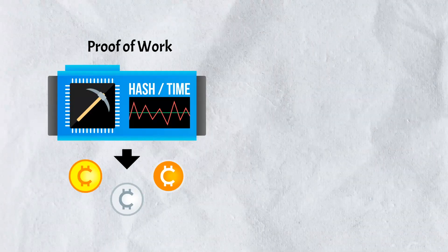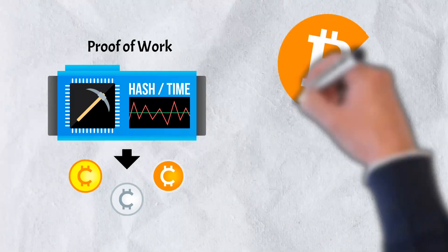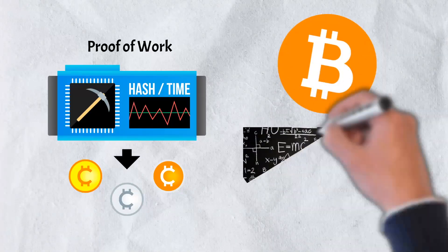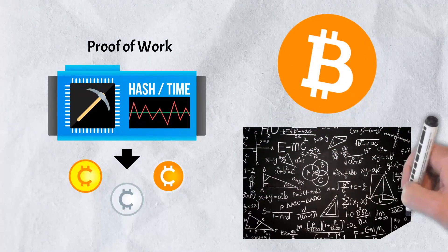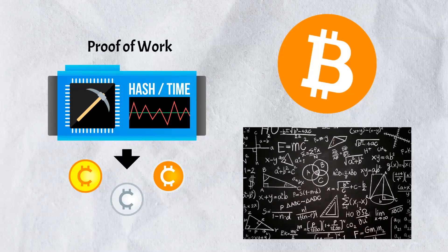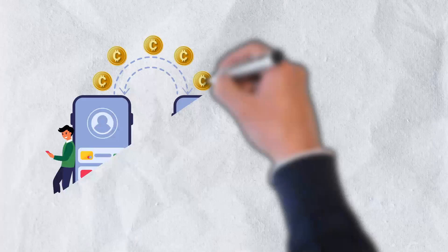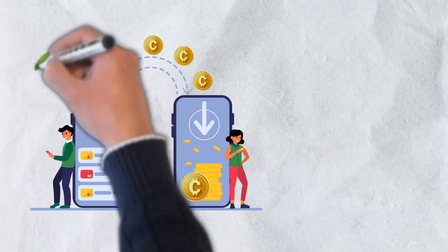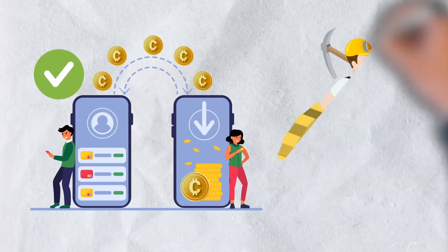Proof-of-work is used by the world's most popular cryptocurrency, Bitcoin. It requires network participants to spend time solving an unpredictable mathematical puzzle in order to prevent the system from being hacked. In cryptocurrency mining, proof-of-work is commonly employed to validate transactions and mine new tokens.